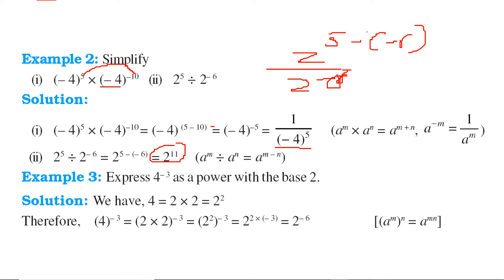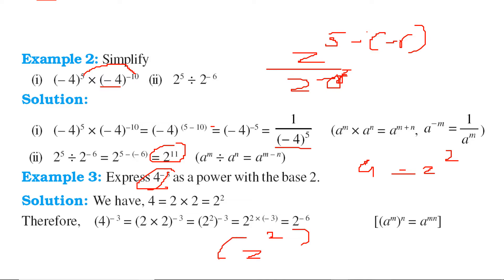Express 4 to the power minus 3 as a power with base 2. Since 4 is nothing but 2 squared, this becomes 2 squared to the power minus 3. The powers get multiplied, giving 2 to the power minus 6. This is the answer.